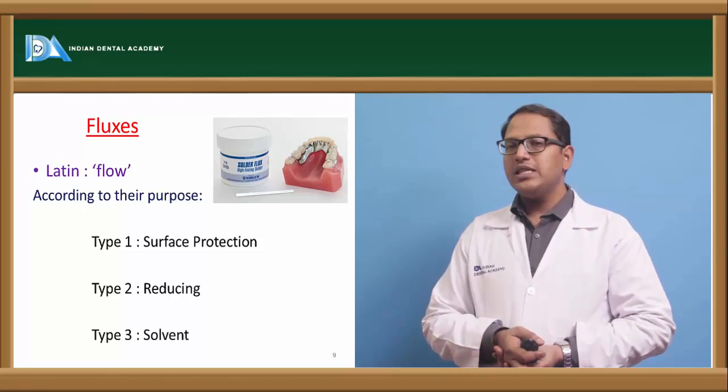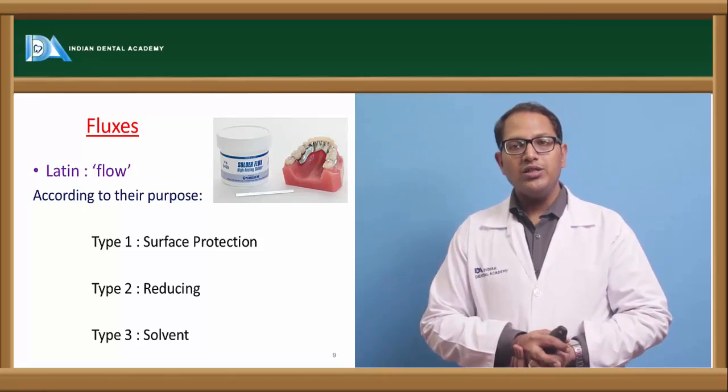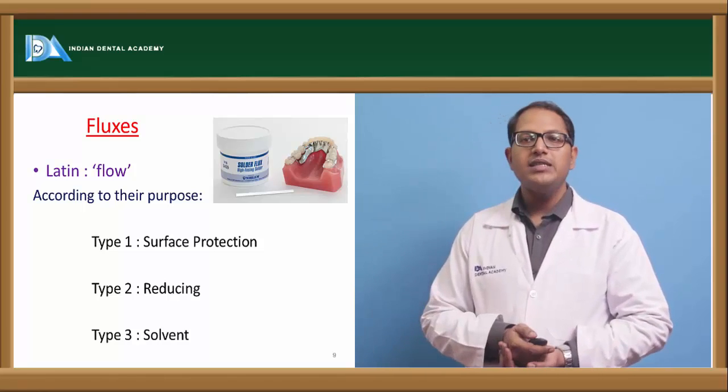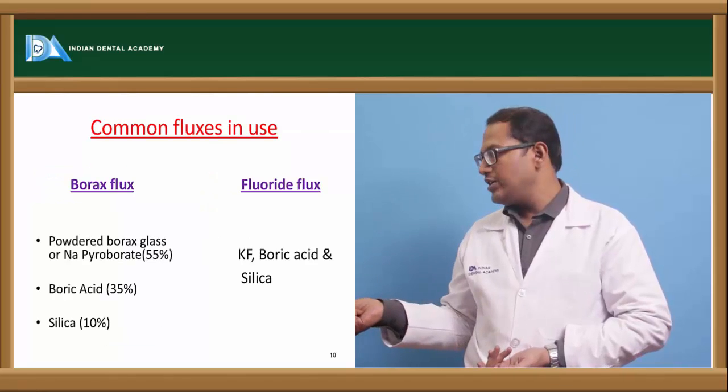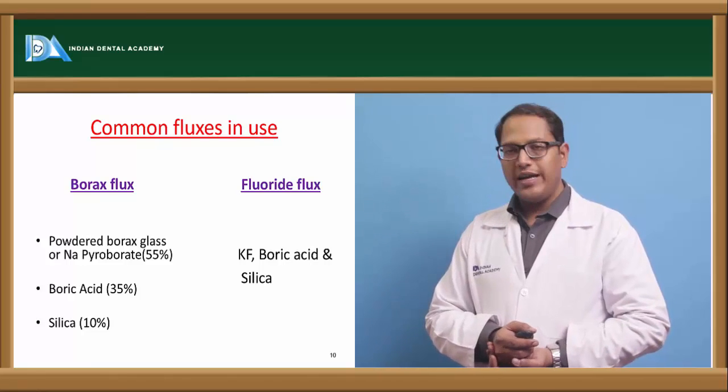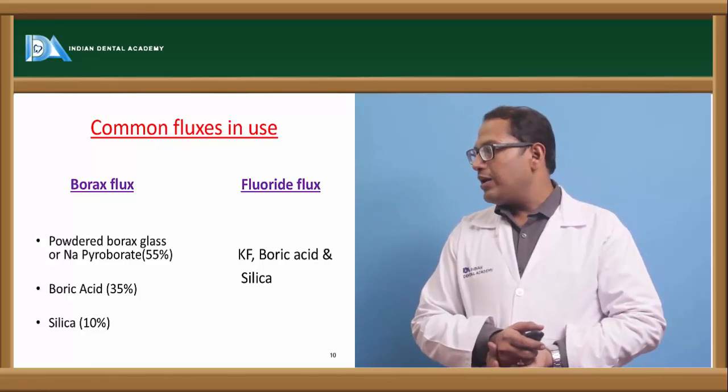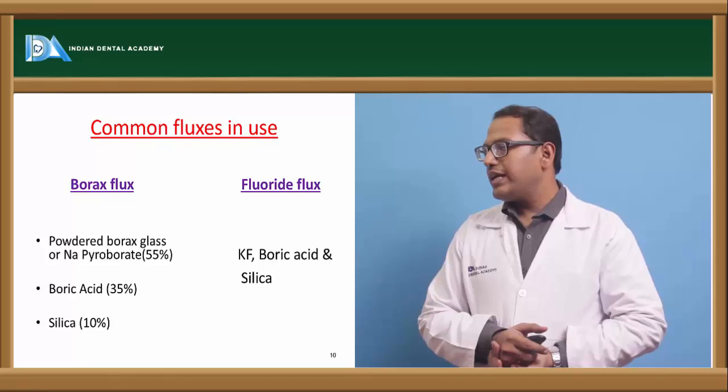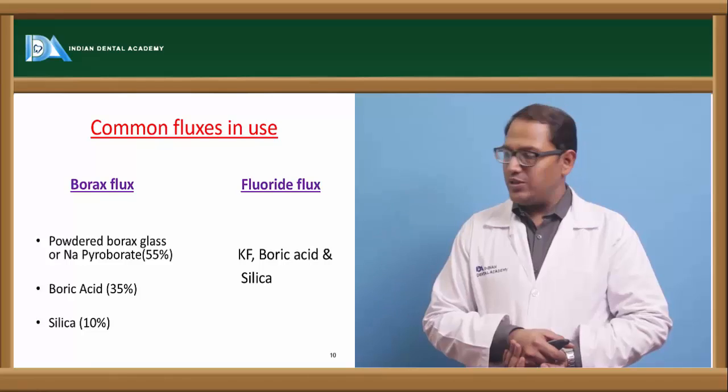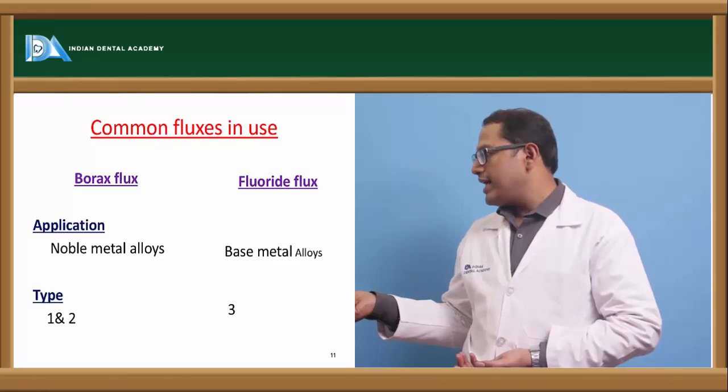Now coming to flux. I told you earlier that flux in Latin means flow. According to their purposes, type 1 is surface protection, type 2 is reducing type, and type 3 is solvent kind of fluxes. The common flux that we use in dentistry is borax and fluoride fluxes. Borax is a powder of borax glass or sodium pyroborate that is 55%, boric acid 35%, and silica as a filler 10%. Whereas in a fluoride flux, we will have more of potassium fluoride, boric acid and silica.